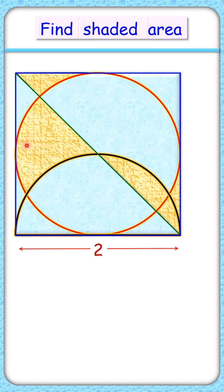Can you find the area of this yellow shaded region where given is a square of side length 2 cm and having a circle and a semicircle inscribed in it? Please pause the video and try the question yourself.